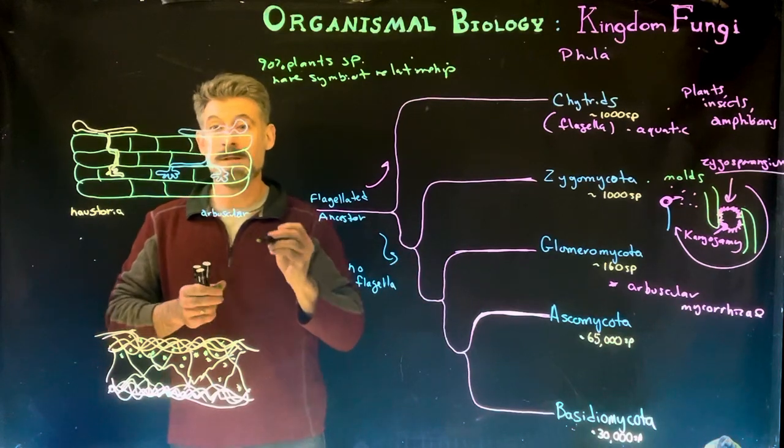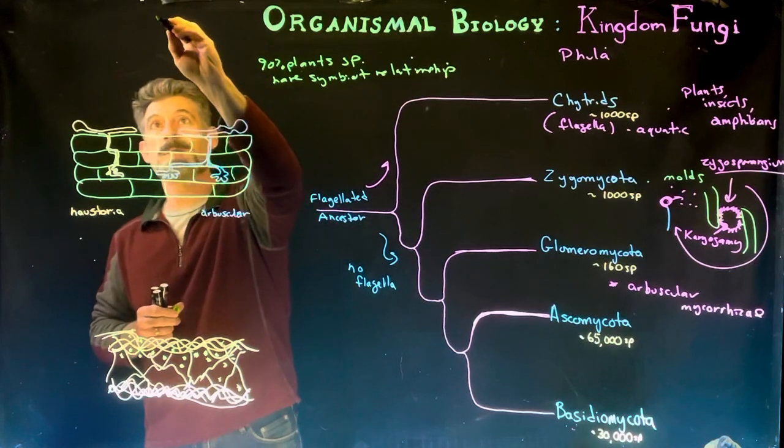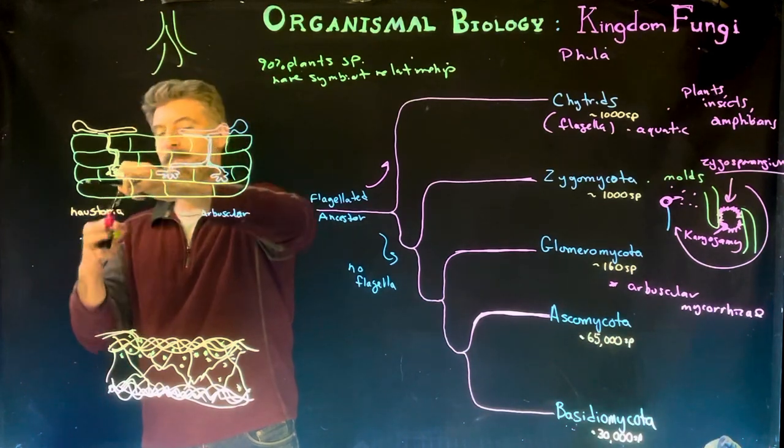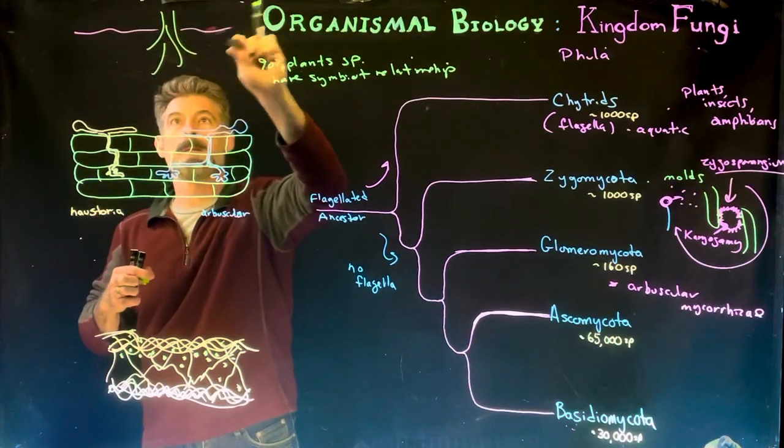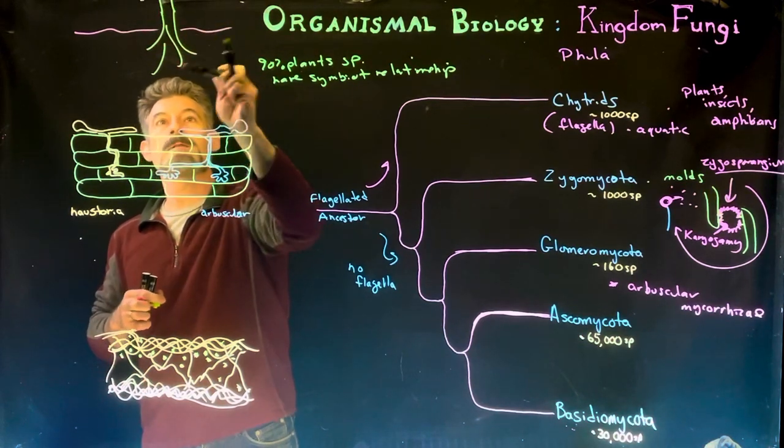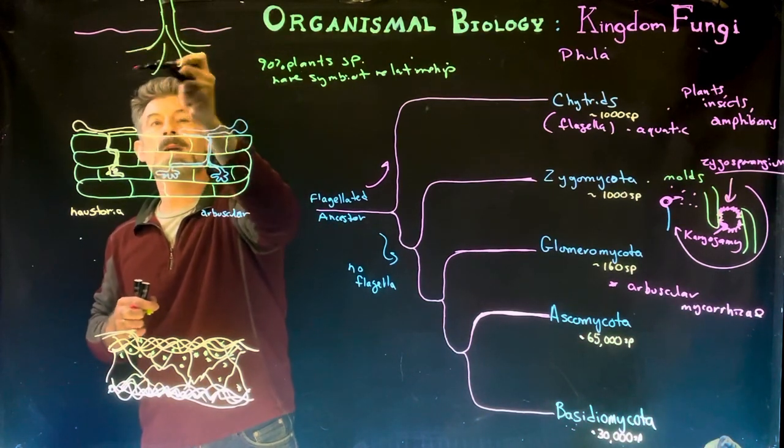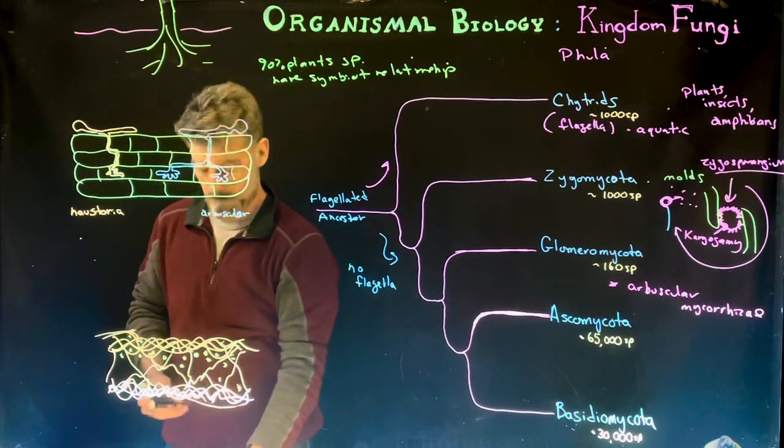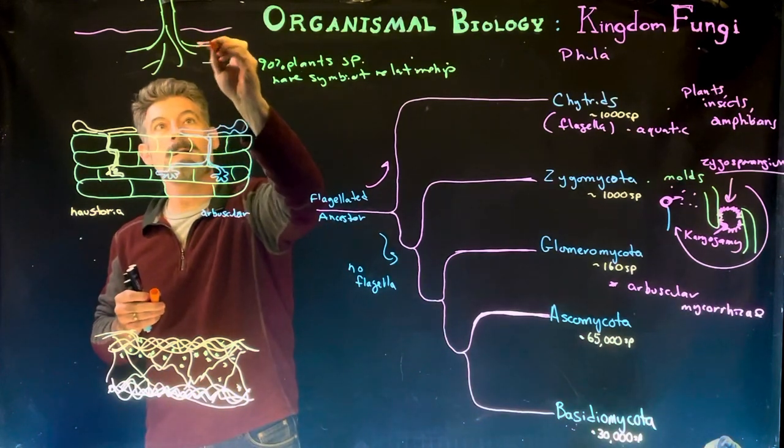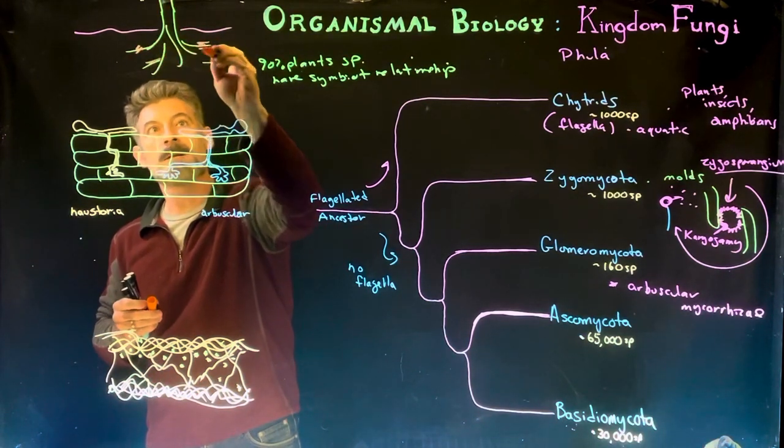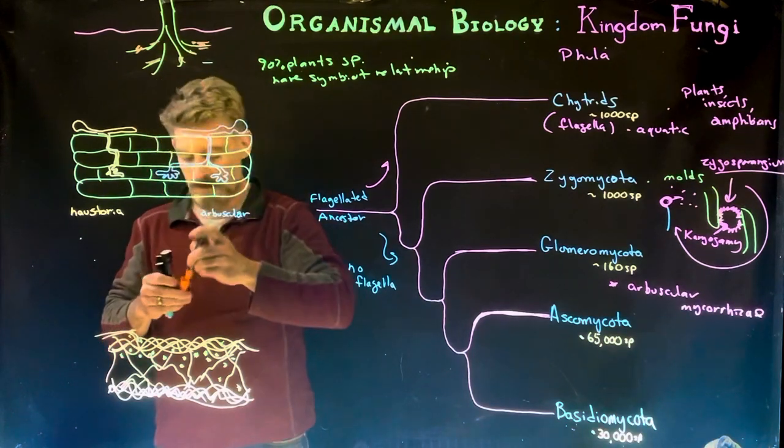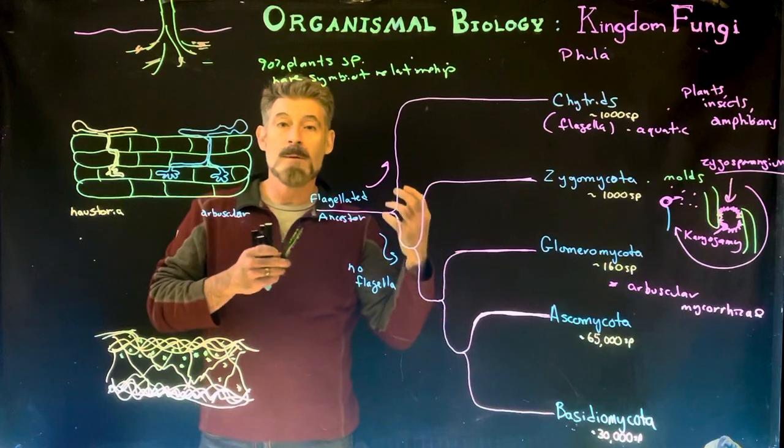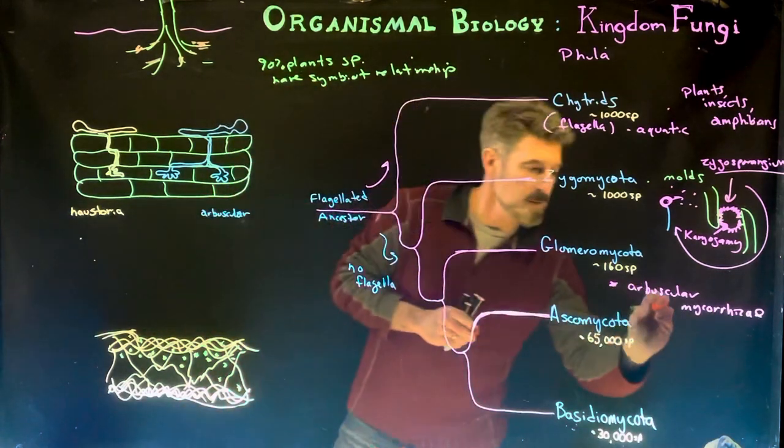If we look at a plant going down into the soil, the stem coming up here, these are the roots down here branching out, then attached to these roots are our hyphae of different types of fungi. And so these fungi form a symbiotic relationship. This is a symbiosis.